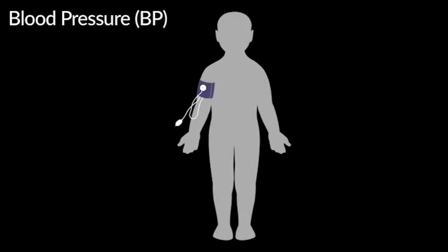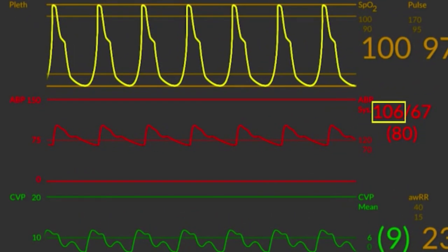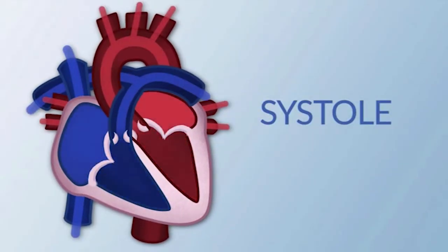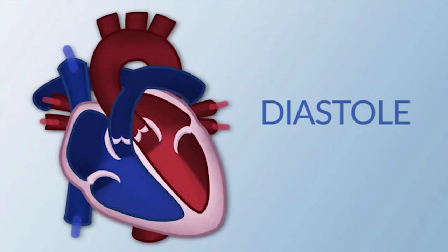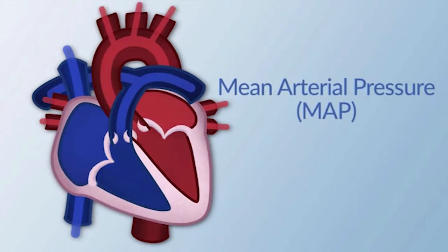Next we'll want to move on to blood pressure. This is going to give you information related to the cardiac output for your patient. It's comprised of three different numbers. The first is known as the systolic blood pressure, over the diastolic blood pressure, and finally the mean arterial blood pressure, which is also referred to as the MAP. The systolic blood pressure measures the pressure during the pumping phase of the heart. The diastolic blood pressure measures the pressure in the patient's vasculature during the refilling portion of the pumping of the heart. The mean arterial pressure, or MAP, is an average using a special calculation of the pressure throughout the cycle of the pumping of the heart.